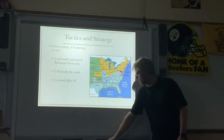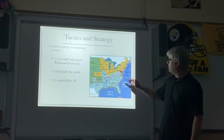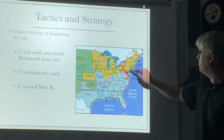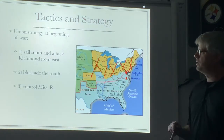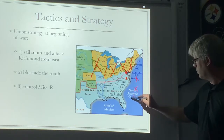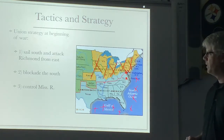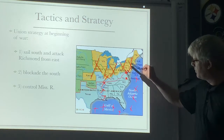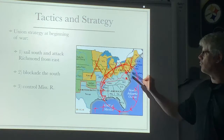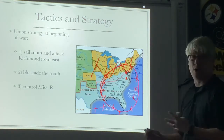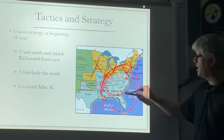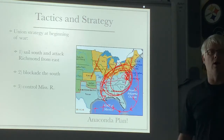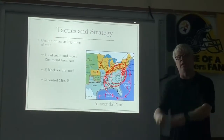Looking at a map: the Union controls all of this northern territory up here. They wanted to blockade the South, surrounding the coastline and not letting anything get in or out. Then the third thing was to take control of the Mississippi River. If the Union is able to do all three of those things, they have the main part of the Confederate states surrounded, and the Union plans to start squeezing the Confederacy all the way to Richmond until they can take them out.